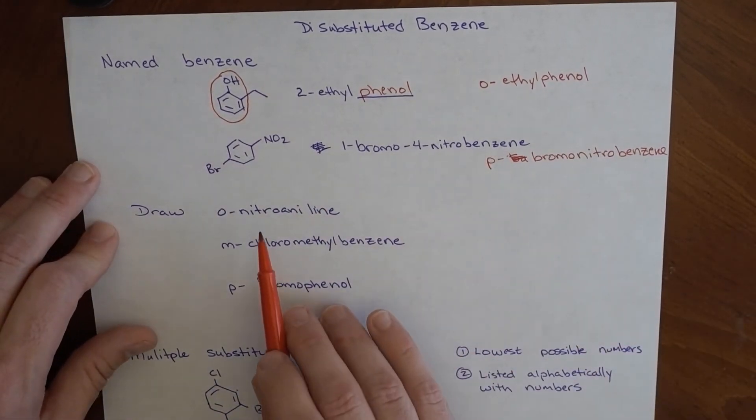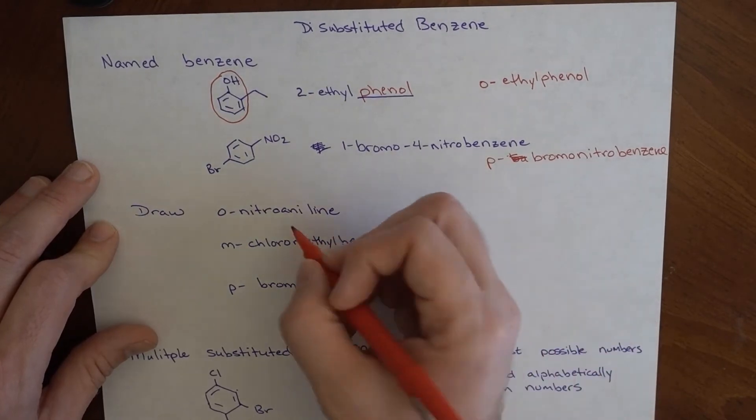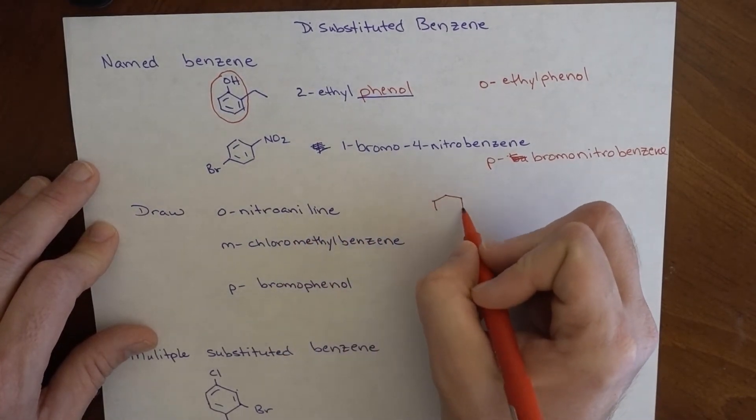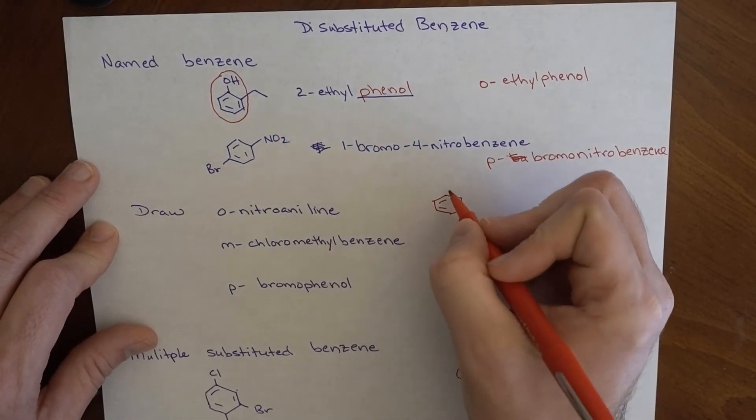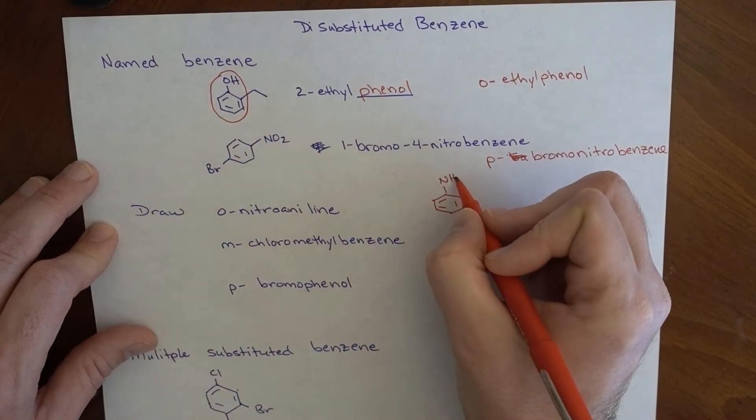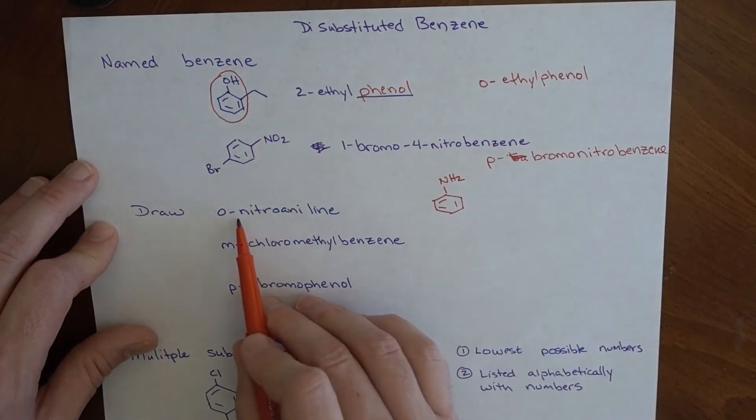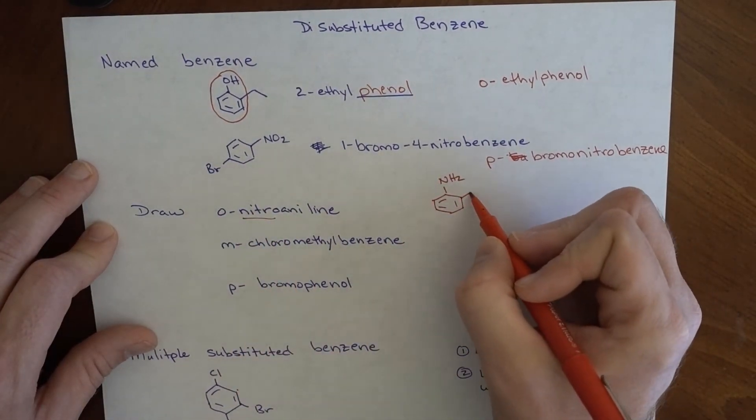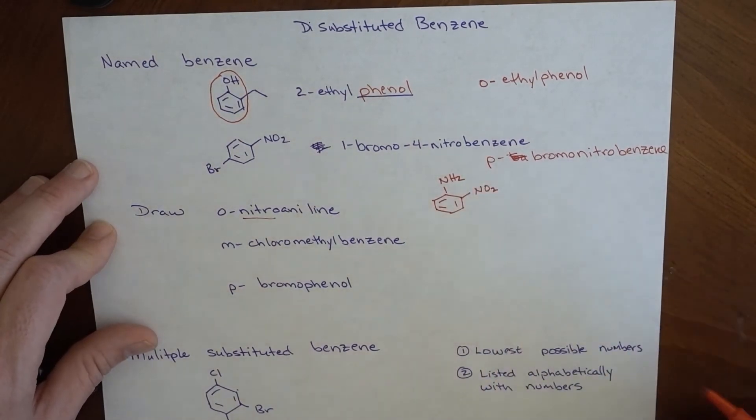How would we draw ortho-nitro-aniline? Aniline, we want to remember, is this. And ortho-to-it is a nitro group, and that is here. So that would be ortho-nitro-aniline.